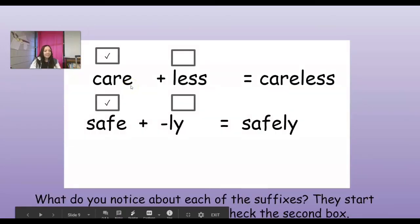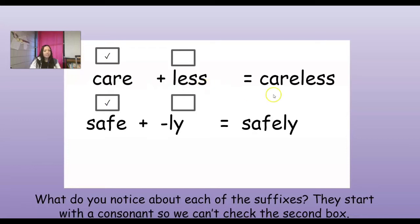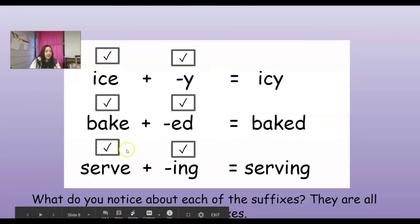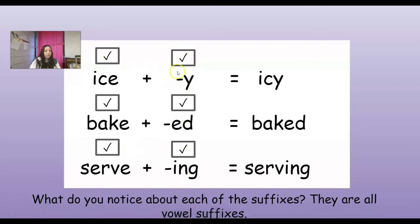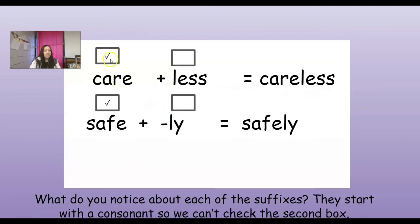So watch. I've got 'care' and it turns into 'careless.' Did I drop anything in that word? No, I didn't drop anything because careless begins with an L, and that's a consonant. So I didn't have to drop anything. Look - 'safely.' LEY is a consonant suffix, it begins with an L. So I can add it no matter if there's a vowel at the end or not. If it ends in a vowel and it's a vowel suffix, I'm going to drop that vowel. If it ends in a vowel and I add a suffix that has a consonant, we don't have to drop anything.